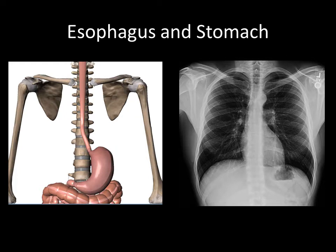For the GI tubes, here's the esophagus and the stomach. We'll be looking on radiographs to see the stomach on the left side, below the hemidiaphragm. People often talk about the stomach bubble, and that is the landmark you'll use to be assured that the GI tube is terminating in the stomach.